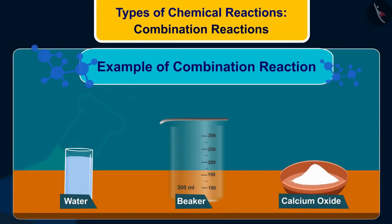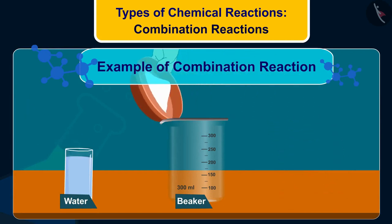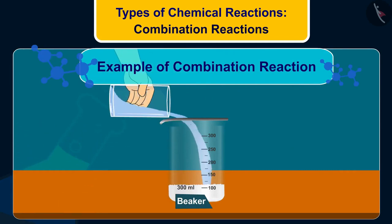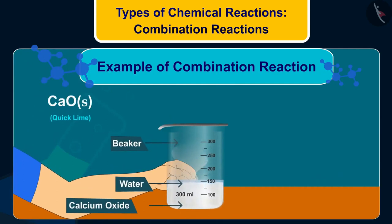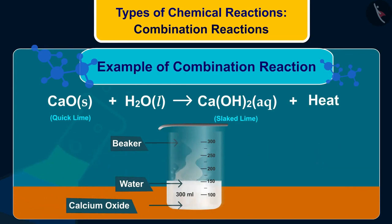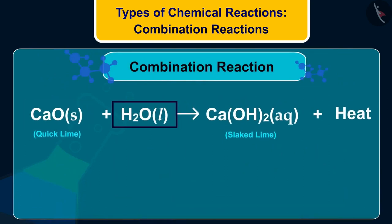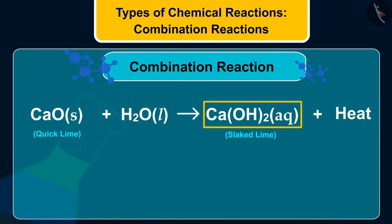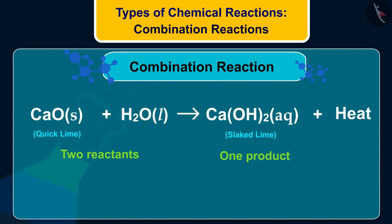Let us take an example of a combination reaction. Take some calcium oxide, which is also called quicklime, in a beaker and add some water to it. Then touch the beaker. Calcium oxide reacts vigorously with water to form slaked lime — that is calcium hydroxide — and releases a large amount of heat energy. You will see that the temperature of the beaker has increased. Note that in this reaction, calcium oxide and water (H₂O) combine to form calcium hydroxide. Two reactants are forming a product together, and heat is being generated in this reaction. Reactions in which heat is produced along with the formation of the product are called exothermic reactions.